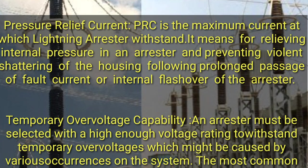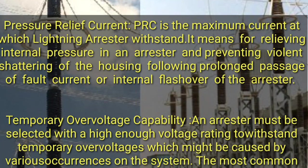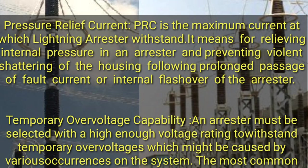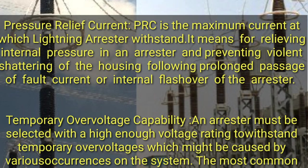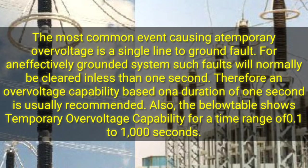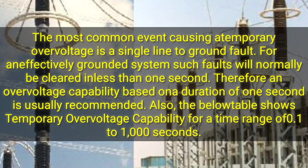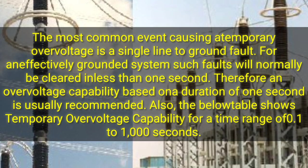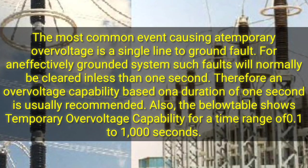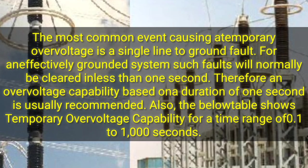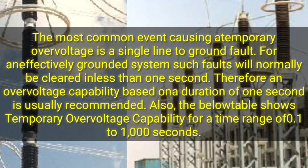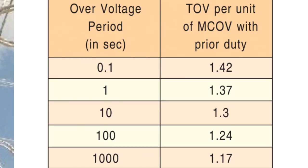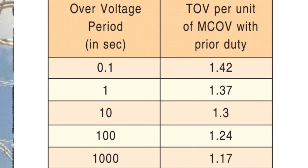Temporary overvoltage capability: an arrestor must be selected with a high enough voltage rating to withstand temporary overvoltages which might be caused by various occurrences on the system. The most common event causing a temporary overvoltage is a single line-to-ground fault. For an effectively grounded system, such faults will normally be cleared in less than one second. Therefore, an overvoltage capability based on a duration of one second is usually recommended. A table shows temporary overvoltage capability for a time range of 0.1 to 1,000 seconds.